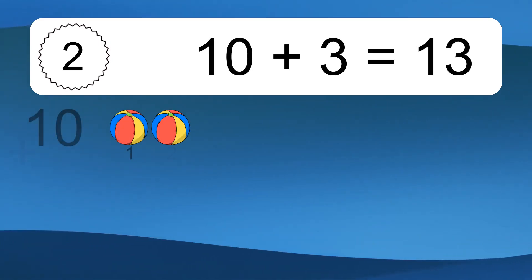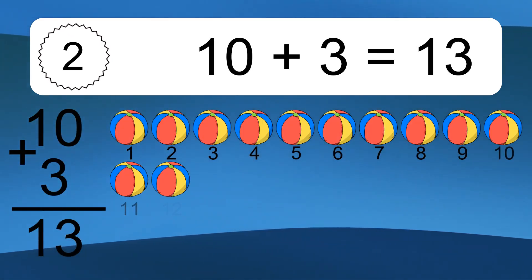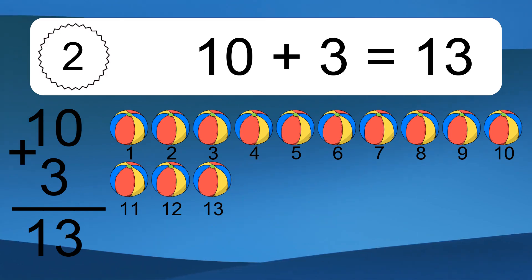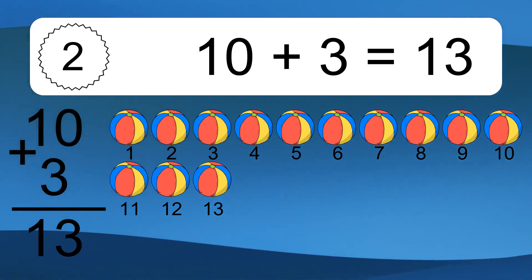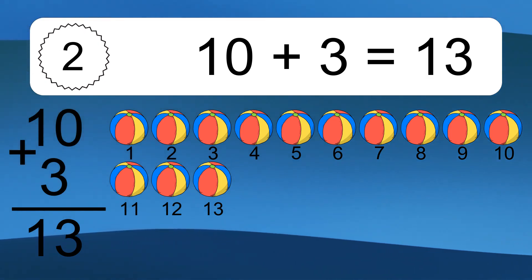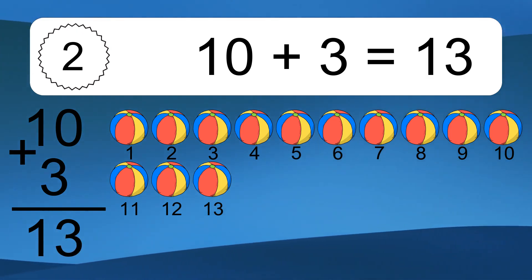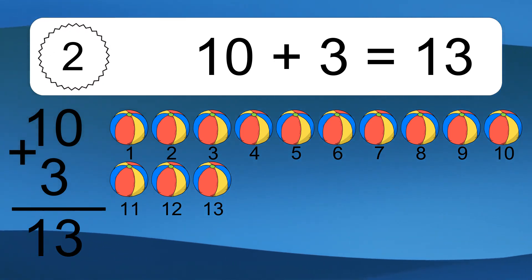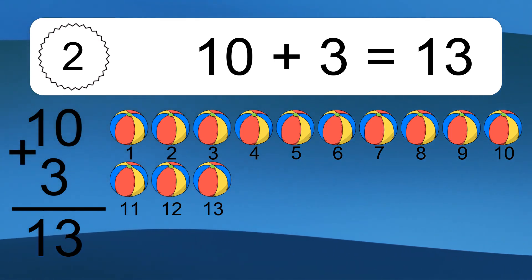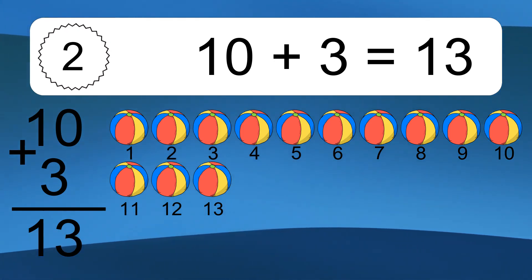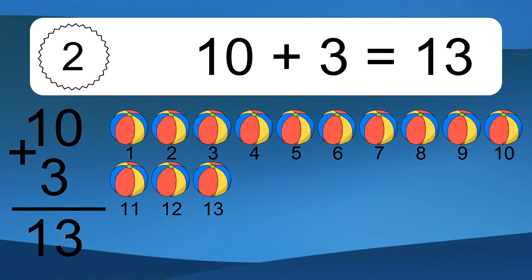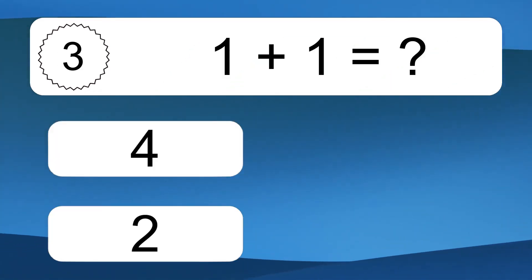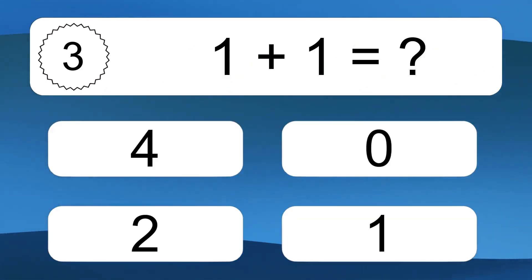Ten plus three equals what? Ten plus three equals thirteen. Let's count it: one, two, three, four, five, six, seven, eight, nine, ten, eleven, twelve, thirteen.